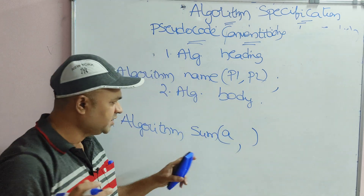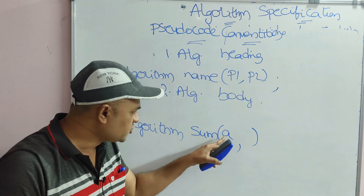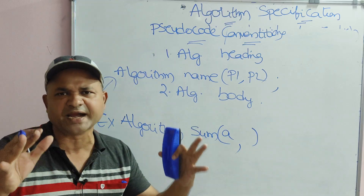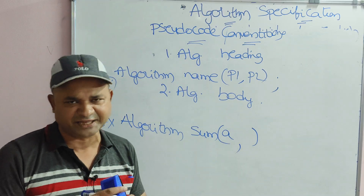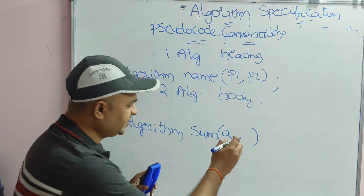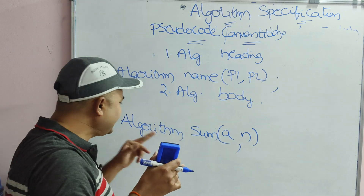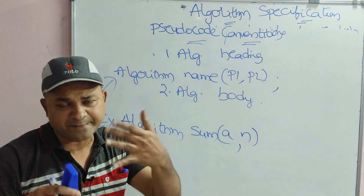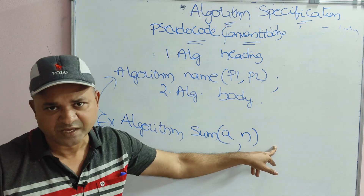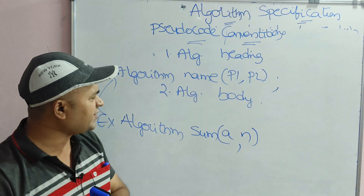The body of the algorithm must be enclosed inside curly braces. A single-line comment always starts with double forward slashes (//). If we want to place multiple statements in a comment, every statement begins with double forward slashes.